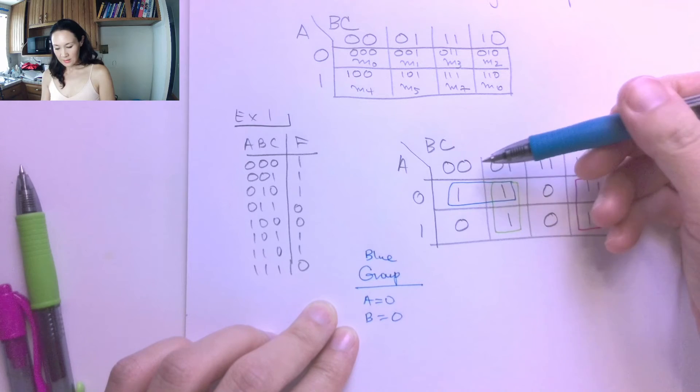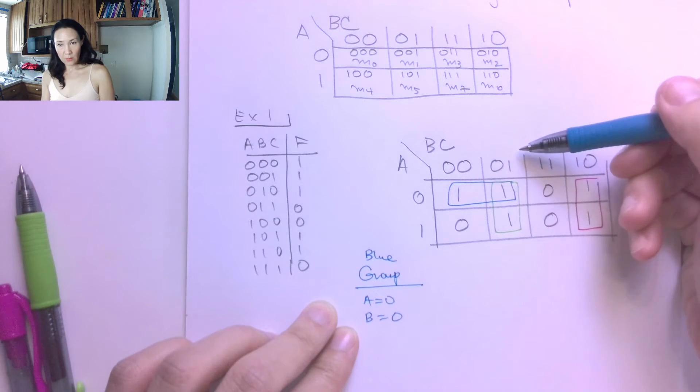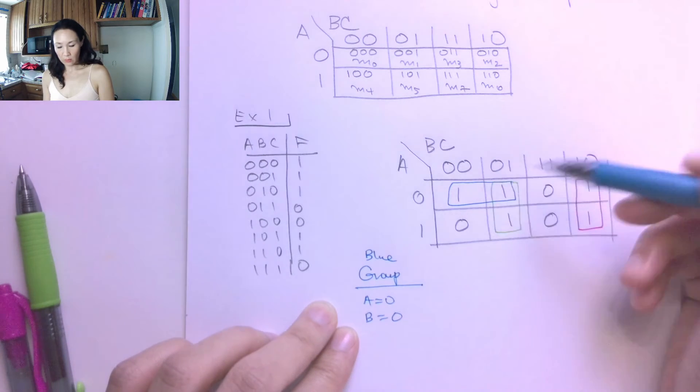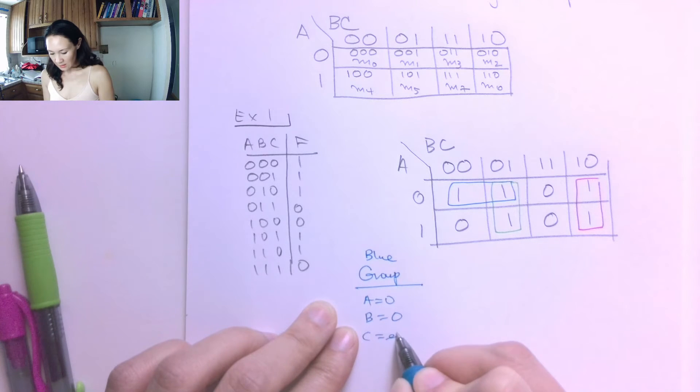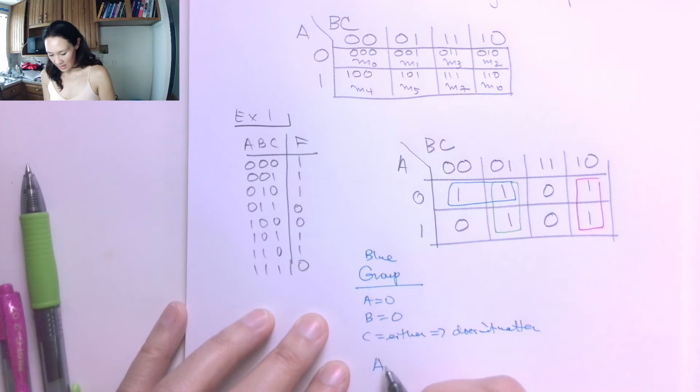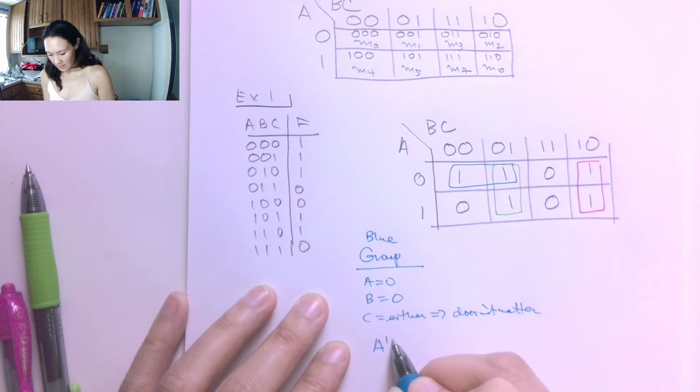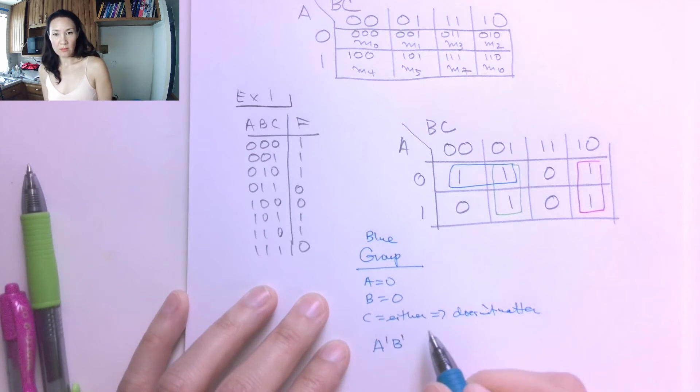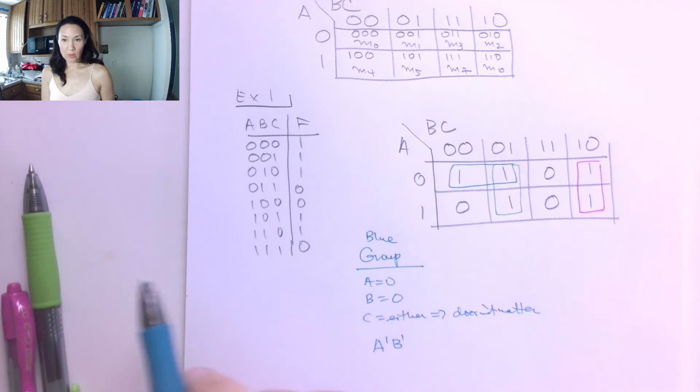But c can be either 0 or 1. And we'll have a 1 in our grouping. So it means if c is either, that means that it doesn't matter. So what does matter is that we have a naught and b naught. So this is our product contribution from the blue group.